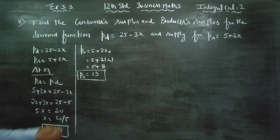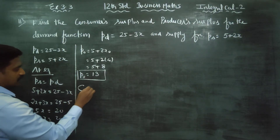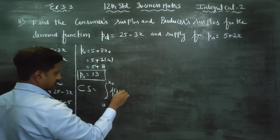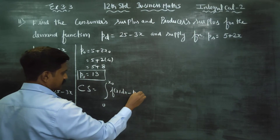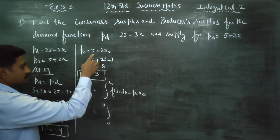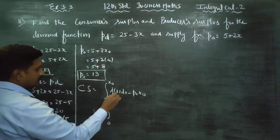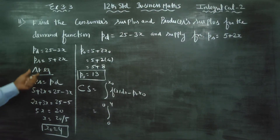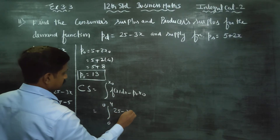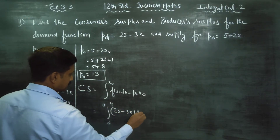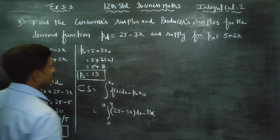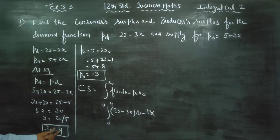After finding this, we will start with consumer surplus. The consumer surplus formula is: integral from 0 to X0 of F(X) dX, minus P0 times X0. So we integrate from 0 to 4 — F(X) for consumer is the demand function, which is 25 minus 3X — then dX, minus P0 which is 13, into X0 which is 4.